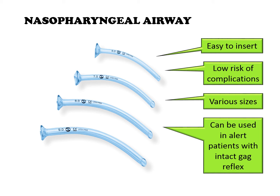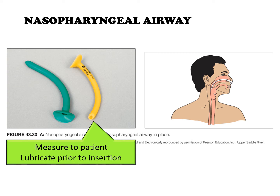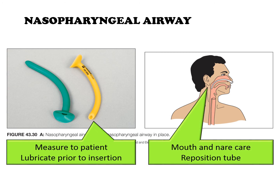It is a soft flexible tube designed for insertion through the nares to the oropharynx. To determine the correct size, measure from the patient's nose to the angle of the jaw. The tube must be lubricated prior to insertion, and care must be taken not to force the tube past resistance. Patients with nasopharyngeal airways require frequent oral and nasal care. The tube must be repositioned every eight hours or more frequently as ordered to prevent necrosis of the nasal mucosa.